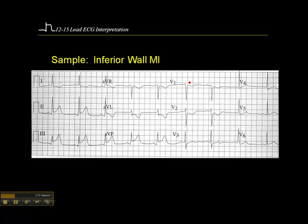In V1, we have a little bit of ST depression. If you'll recall from one of the earlier presentations, when you see an inferior wall MI with ST depression in V1 and V2, that suggests there may be a posterior wall infarction as well.